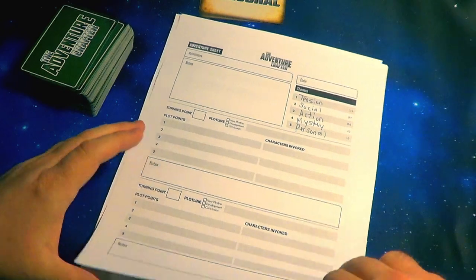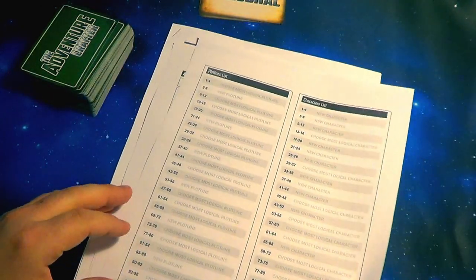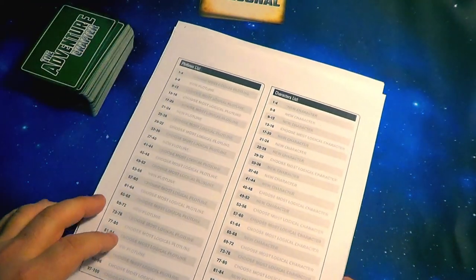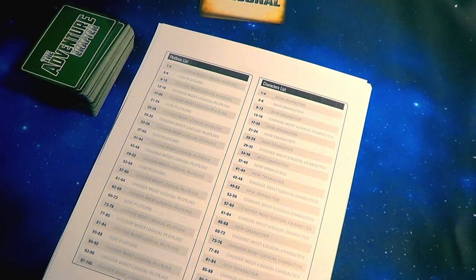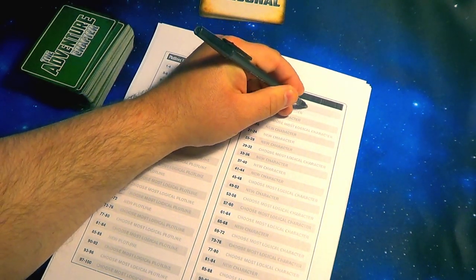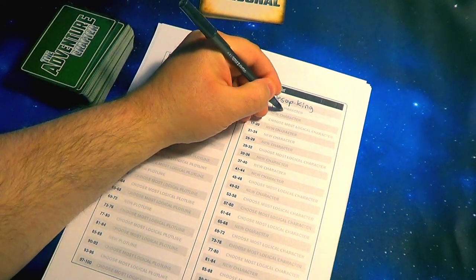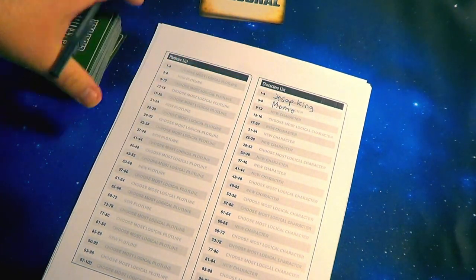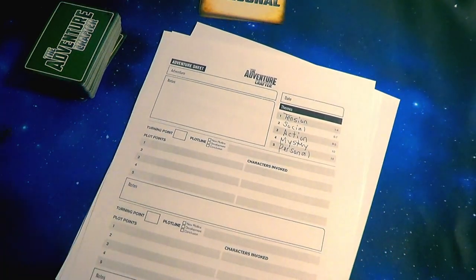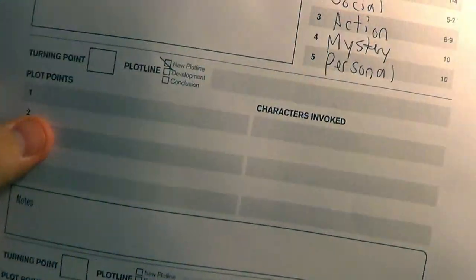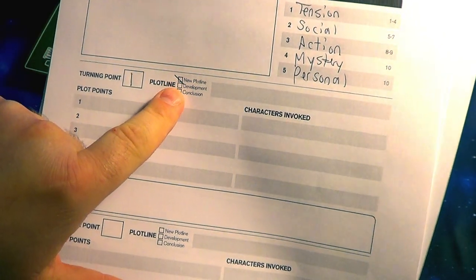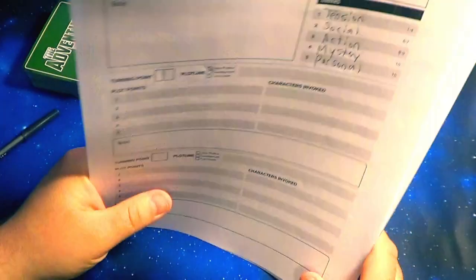So what I'm going to do is just lay out the context here. On the left we have our plot lines — our stories that are developing — and characters, so who's in there. I'm going to fill this out because I have some information already. The first character I'm going to put is Jessup King — he's our main character. I'll also include Momo; she's the sidekick character, always involved. As for actual plot lines, nothing's happening just yet, so we're going to figure that out. We're going to draw five cards one at a time, and the first thing we do is draw two cards. The first card has a number on it.